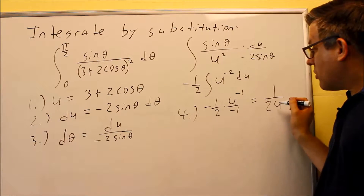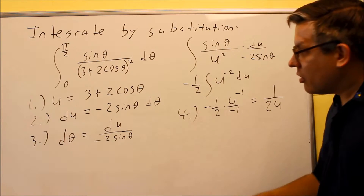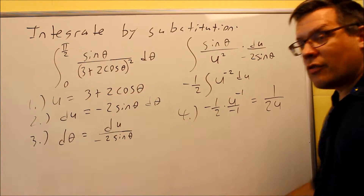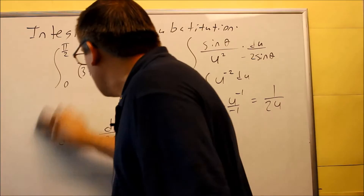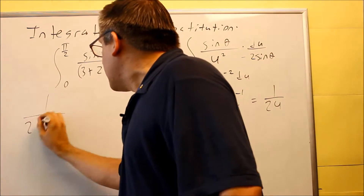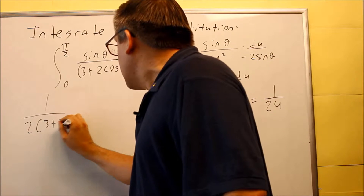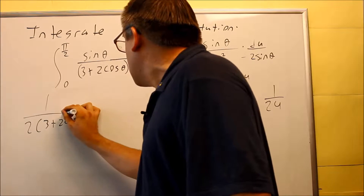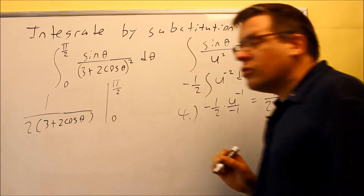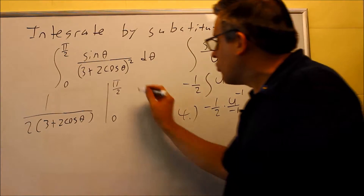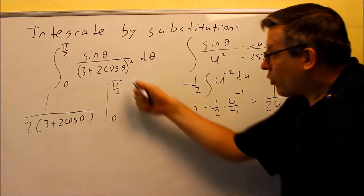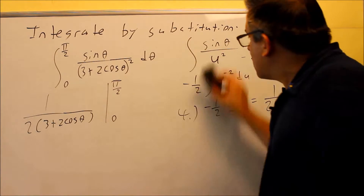Once you get to this stage, you want to plug in your u. We're going to put the original expression back in for u so we have all the correct variables again. We have 1 over 2 times (3 plus 2 cosine theta). You can leave it like that, or distribute the 2 all the way through — it doesn't matter. The bar indicates we're now ready to plug in our limits of integration.